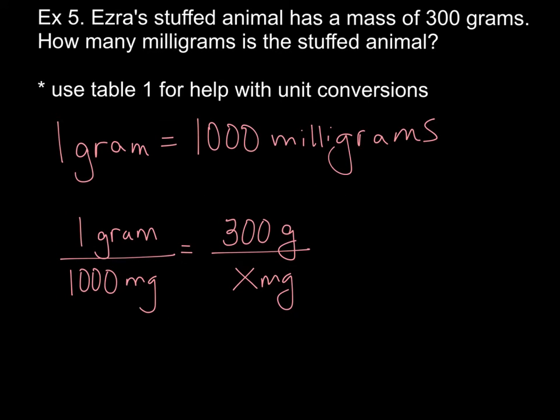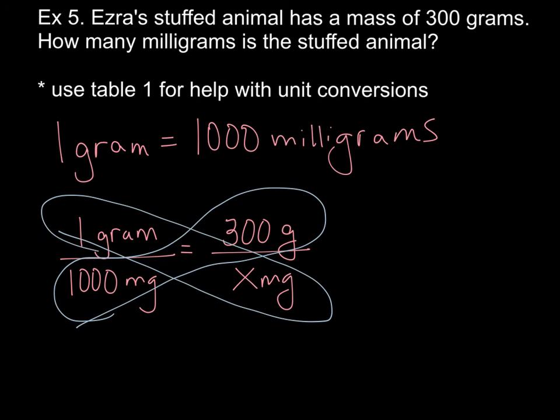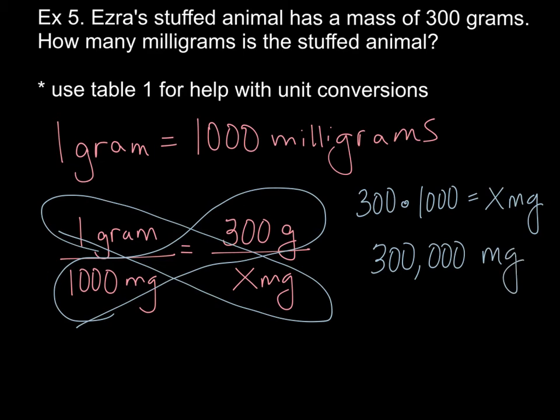So we are going to do our cross multiplication. And as you can see, we're going to take 300 times 1,000 and set it equal to that X, you know, milligrams, basically. So 300 times 1,000 is 300,000. So that is how many milligrams this stuffed animal is. You just had to multiply them together.